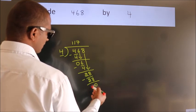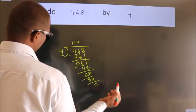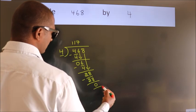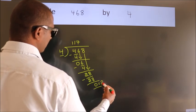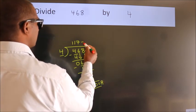After this, no more numbers to bring down. So we stop here. This is our remainder. This is our quotient.